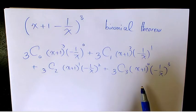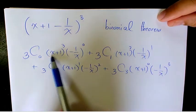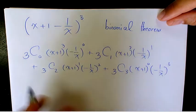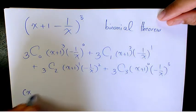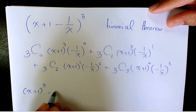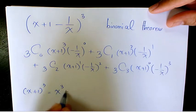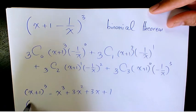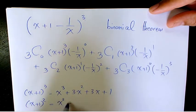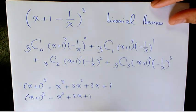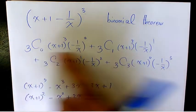Now we need to start simplifying. We have (x+1)³ and (x+1)², so it's better to expand these as well. (x+1)³ expands to x³ + 3x² + 3x + 1. And (x+1)² using the binomial theorem is x² + 2x + 1.